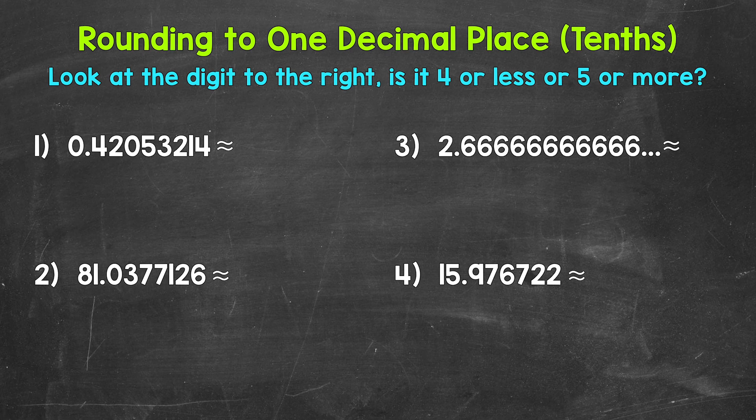Let's jump into number one, where we have a fairly long decimal. We need to round to one decimal place. In other words, we are going to cut this decimal off after one decimal place, the tenths place.